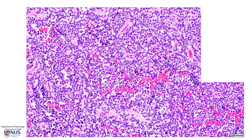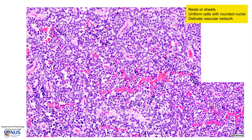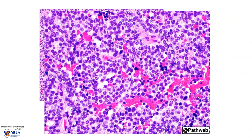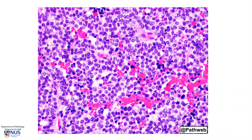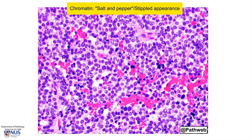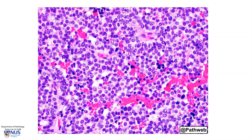Microscopically, pituitary adenomas are usually composed of nests or sheets of rather uniform cells, with quite rounded nuclei, all more or less uniform in size and shape, and there is a delicate vascular network. On higher magnification, we can see that many of these tumour cells have what we call a salt-and-pepper or stippled chromatin pattern, where we can see some coarser bits of chromatin and some finer bits mixed together. This is a classical picture of nuclear features in neuroendocrine tumours.